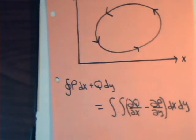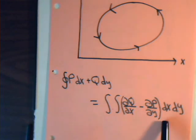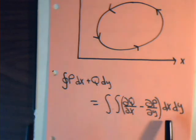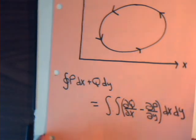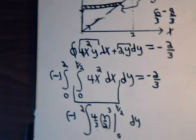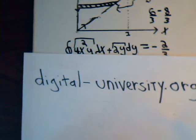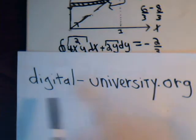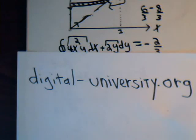Remember: when evaluating the double integral, you can use dx dy or dy dx. If it's dx dy, that involves horizontal strips, so set up your limits accordingly. If it's dy dx, those are vertical strips with a different set of limits. That's it for this problem. The playlist for the vector analysis series is at digital-university.org, along with playlists for all the other video series. Thank you very much.